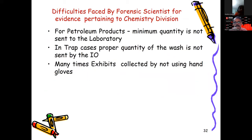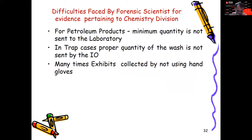For the chemistry division, for petroleum products, minimum quantity is not sent to the laboratory, so examination is not possible. In trap cases, proper quantity of the wash is not sent by the IO, and if proper wash is not there, the expert cannot give an opinion. Many times exhibits are collected without using hand gloves.